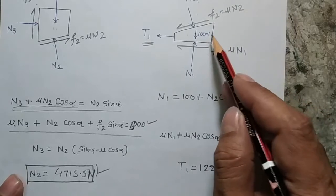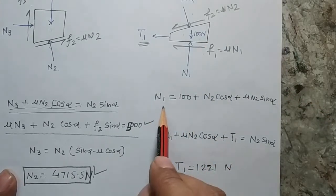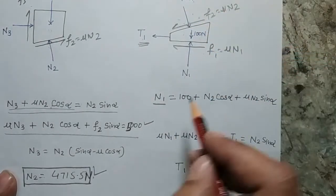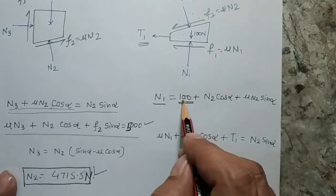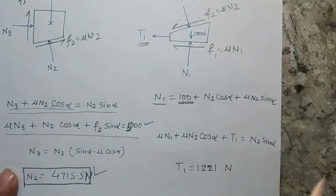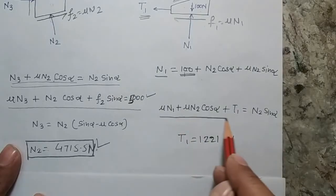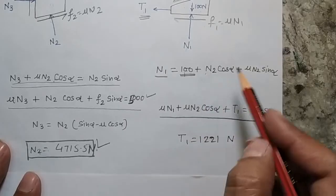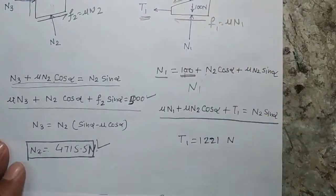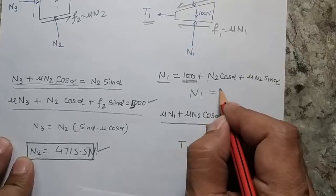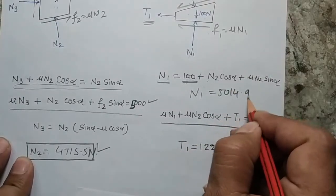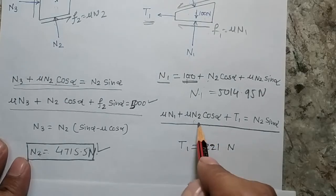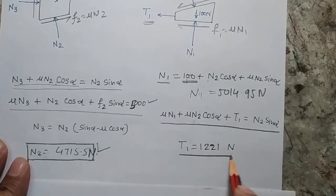Now I will solve the equations for the block. Writing the vertical force balance: N1 acts upward, and all other forces have a downward component, including the 100 Newton weight. Writing the horizontal force balance gives another equation. Putting the N2 value into this equation, I get N1 coming out as 5014.95 Newton. When I put both N1 and N2 into the vertical equation, I get the tension coming out as 1221 Newton.